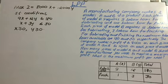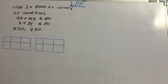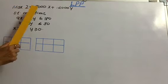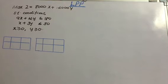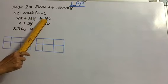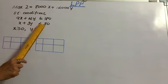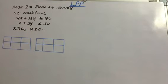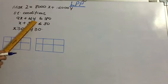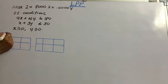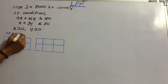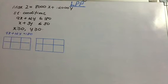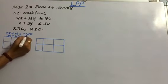Now let us consider the graphical solution to this problem. The optimal equation is maximize Z = 8000x + 12000y, subject to: 9x + 12y ≤ 180, x + 3y ≤ 30, and x ≥ 0, y ≥ 0. Consider the first inequality 9x + 12y ≤ 180. Taking the equality part: 9x + 12y = 180, which simplifies to 3x + 4y = 60.